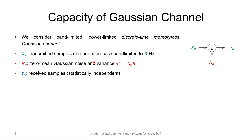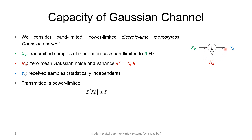Let's start with our model. We consider a band-limited, power-limited, discrete memoryless channel. By now every one of these words should have a clear meaning: band-limited means the channel has a limited bandwidth B, power-limited means the expected value of the input is limited by P. We're dealing with a memoryless channel. The simple model shows X in green, which is the transmitted samples of a random process.